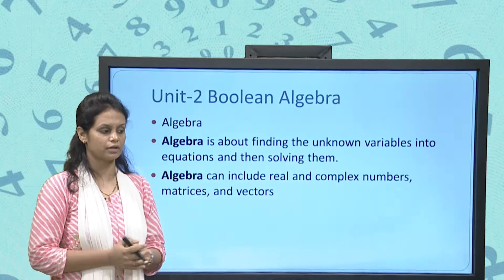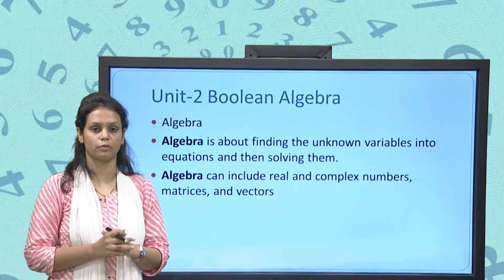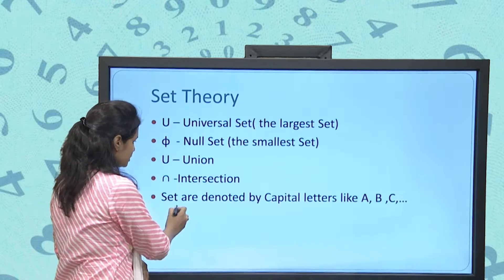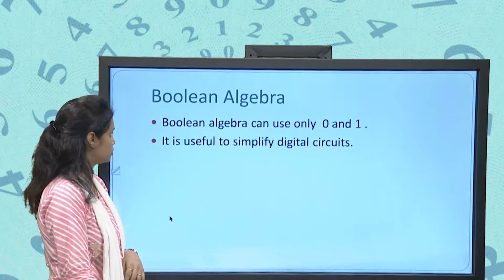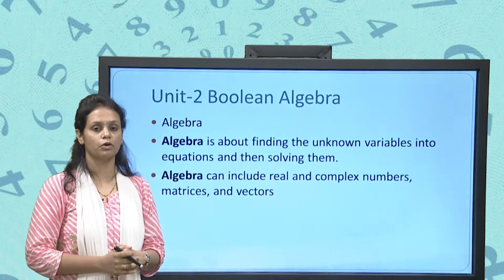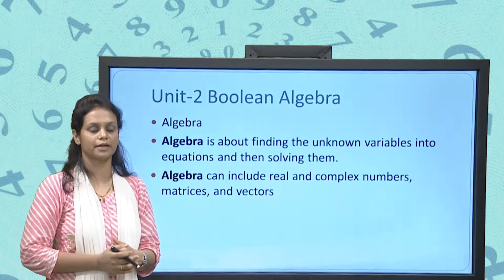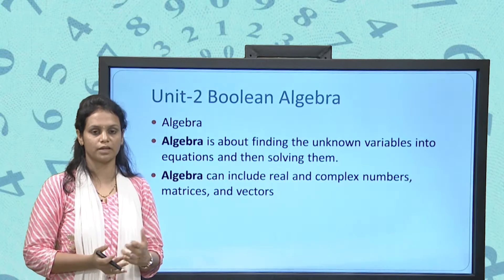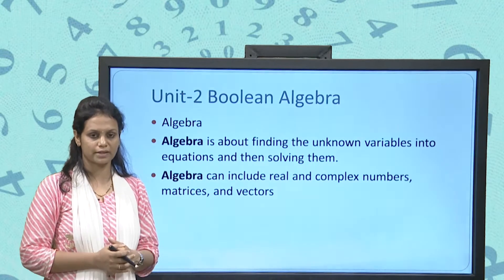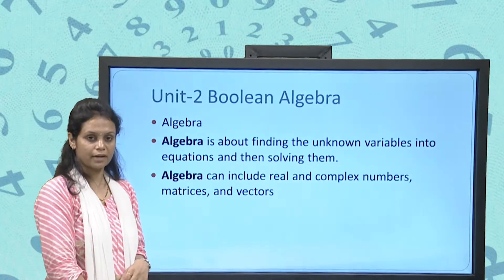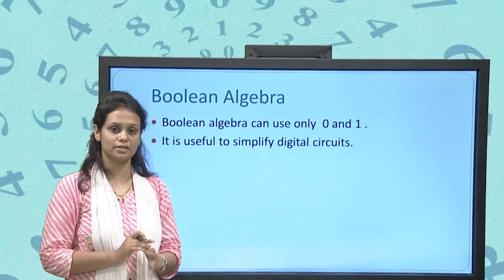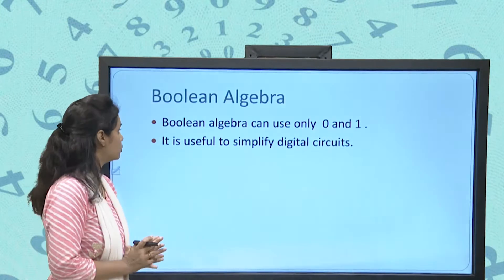Suppose we have the equation x² − 4 = 0 and we want to find the value of x — that is normal algebra. In Boolean algebra, we will use only the numbers 0 and 1.